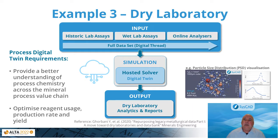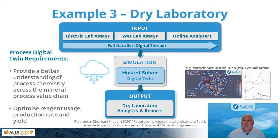Example three: a dry laboratory example. This example is based on a paper from Gobani et al., 'Repurposing Legacy Metallurgical Data: A Move Towards Dry Laboratories and Data Bank.' The availability of integrated laboratory data, including transformation of historical assays, would enable the shift to a dry laboratory environment as a future-oriented approach. This example shows lab data taken from historical assays, wet lab assays, and online analyzers forming a digital thread. The dry lab digital twin allows for a better understanding and visualization of process chemistry across the mineral process value chain, allowing for improved optimization of the process.